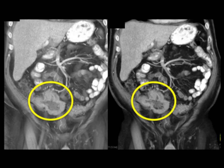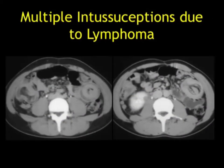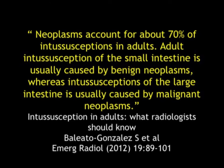With lymphoma, you can also have polypoid masses, and when you have polypoid masses, intussusceptions are one of the problems. When you have multiple intussusceptions, you've got to be thinking lymphoma — it could also be metastasis. A primary adenocarcinoma causing an intussusception is usually solitary. Multiple intussusceptions: think lymphoma, think melanoma. In adults, about 70% of intussusceptions are due to tumors. Often these are benign tumors, including things like lipomas. In large bowel intussusceptions, it's usually malignant tumors, but not always.